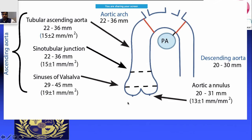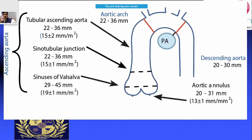When measuring aortic diameters, there are different intervals — especially relevant if long-standing aortic regurgitation has caused aortic dilatation. Dimensions are taken at the sinuses of Valsalva, the sinotubular junction, and the tubular ascending aorta — three levels for the ascending aorta — as well as the aortic arch and descending aorta.